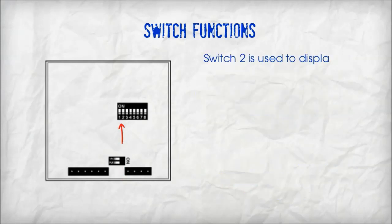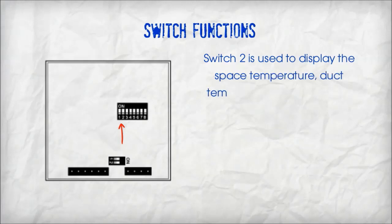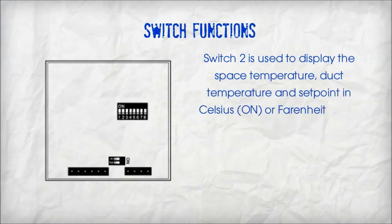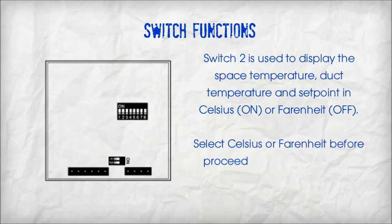Switch 2 is used to display the space temperature, duct temperature, and set point in Celsius (on) or Fahrenheit (off). Select Celsius or Fahrenheit before proceeding to the thermostat setup.